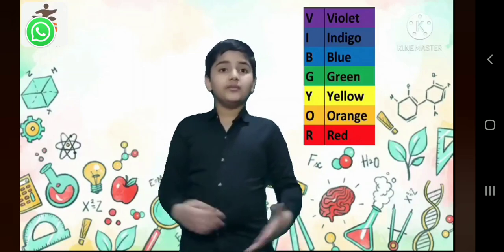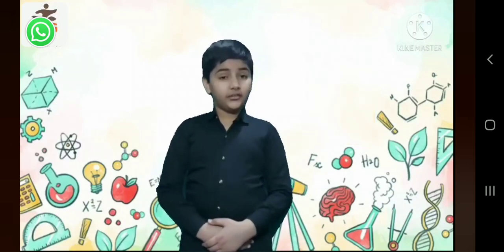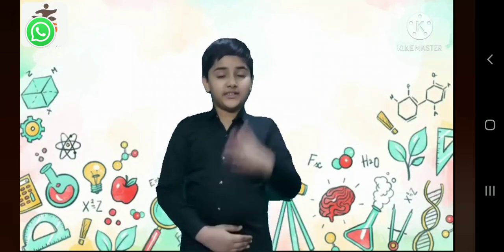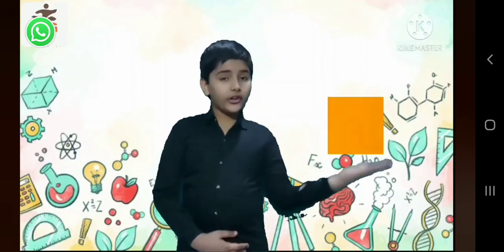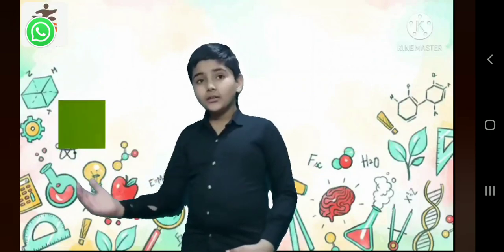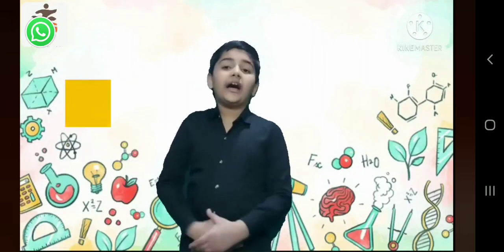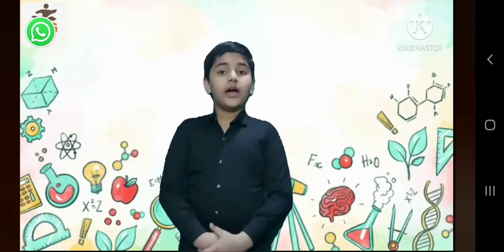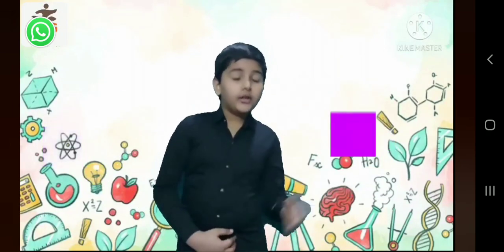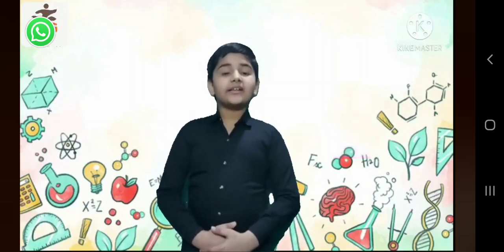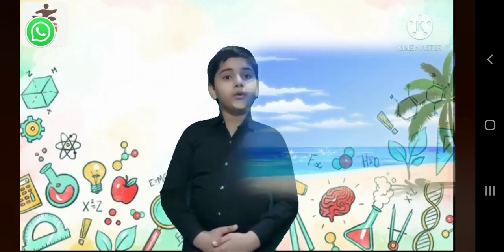He came to a conclusion: when the sunlight falls on the surface of the water, it passes deep into the water and the colors red, orange, green, and yellow are absorbed by light. And colors blue, indigo, and violet are scattered, making the sea water look blue.